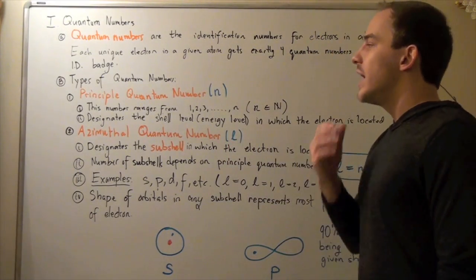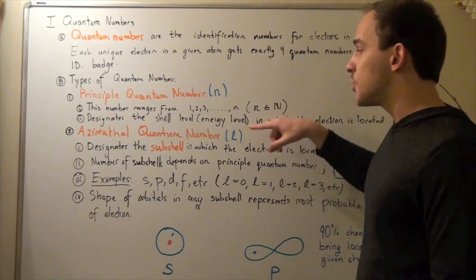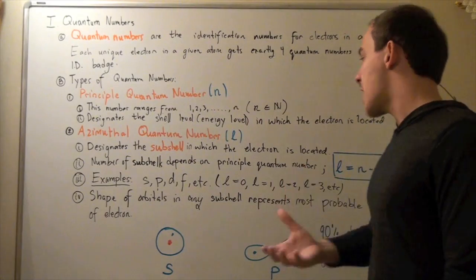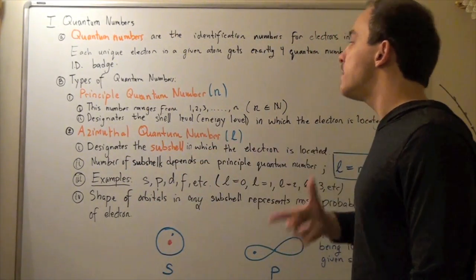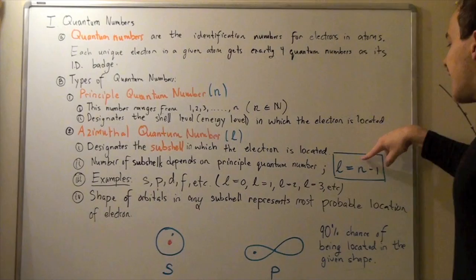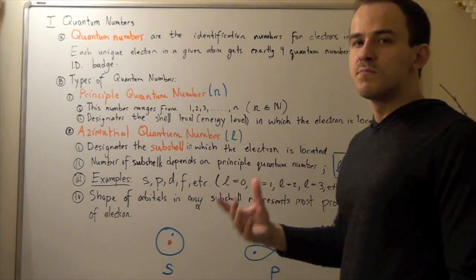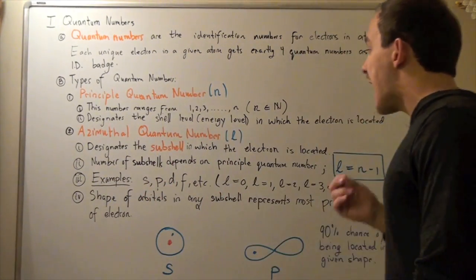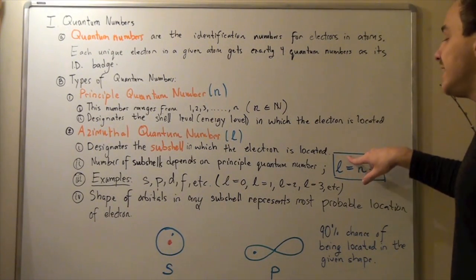The second quantum number is known as the azimuthal quantum number, represented by the lower case cursive L. This quantum number designates the subshell in which our electron is located. The number of subshells depends on the principal quantum number, given by L equals N minus 1. For example, if our principal quantum number is N equals 4, then L equals 4 minus 1, so L equals 3.